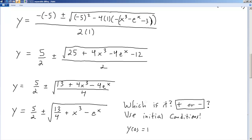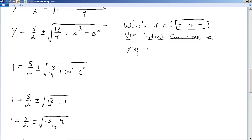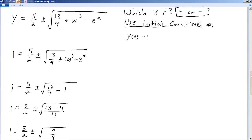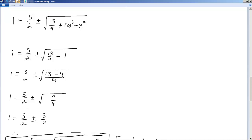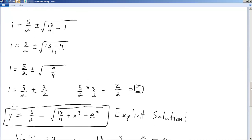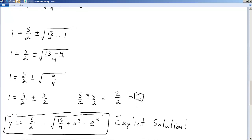And now we have a question. We want to know, what is it? Is it plus, or is it minus, or is it both? Now we have to use the initial condition again. So once again, everywhere we see an x, we put 0. Everywhere we see a y, we put 1. And we solve this. We go through and we do all the algebraic steps very, very carefully. And we end up with 1 is equal to 5 over 2 plus minus 3 over 2. Obviously, it's the minus because 5 halves minus 3 halves equals 2 over 2, which is 1. So that tells us that the minus is the one we want. And our explicit solution is 5 halves minus the square root of 13 over 4 plus x to the 3rd minus e to the x. That's our explicit solution.